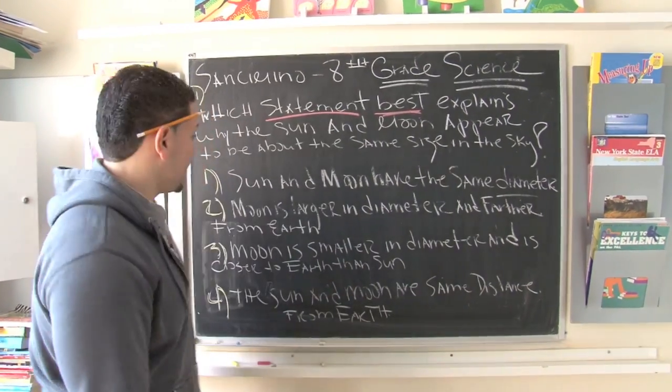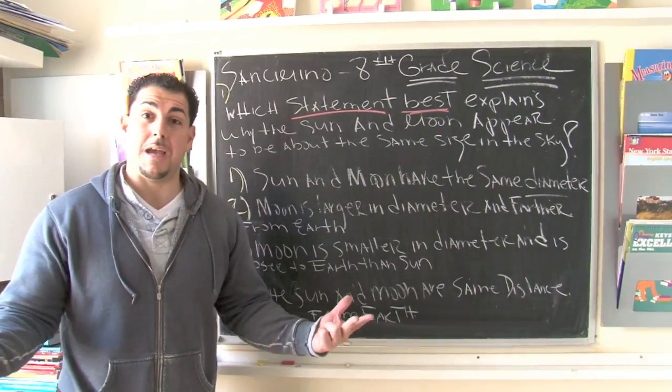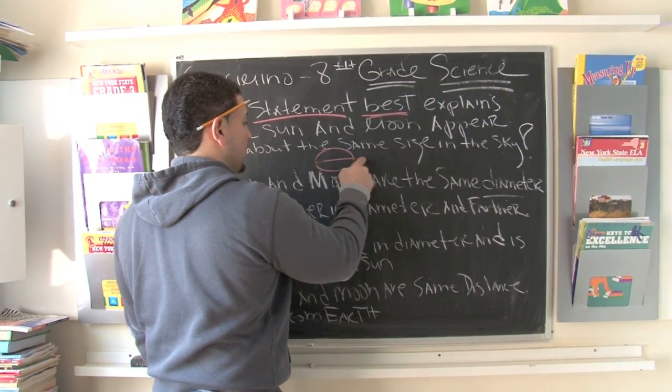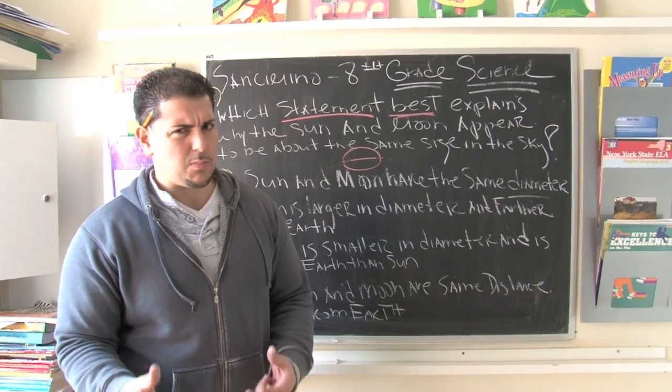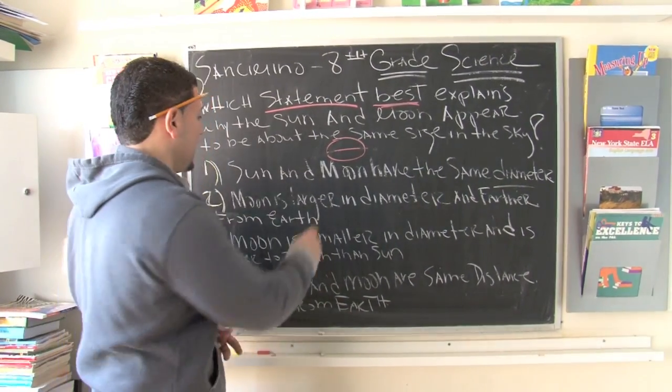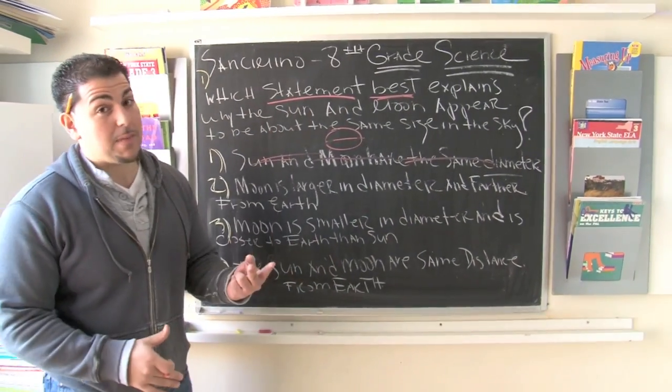So let's get a look at some of the choices they give us. The first choice says the sun and the moon have the same diameter. Well, for my math people out there, you know diameter measures what? The distance from across the circle. Now, if we know that the moon is smaller than the sun, we know that their diameter cannot be the same. So right away, forget about it, and think about that from a math perspective.